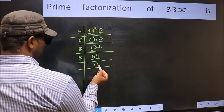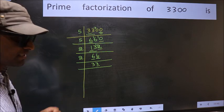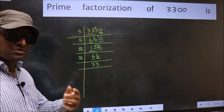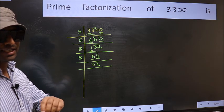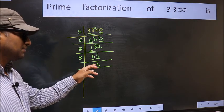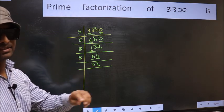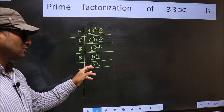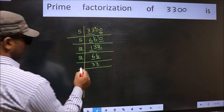Now last digit 3, not even, so not divisible by 2. Next prime number 3. To check divisibility by 3, for that we should add the digits. What I mean is 3 plus 3, we get 6 and 6 is divisible by 3. So this number also divisible by 3. So take 3 here.